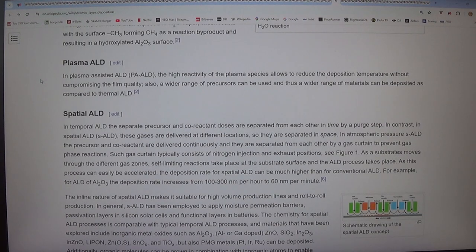Plasma ALD. In plasma assisted ALD, the high reactivity of the plasma species allows to reduce the deposition temperature without compromising the film quality. Also, a wider range of precursors can be used and thus a wider range of materials can be deposited as compared to thermal ALD.